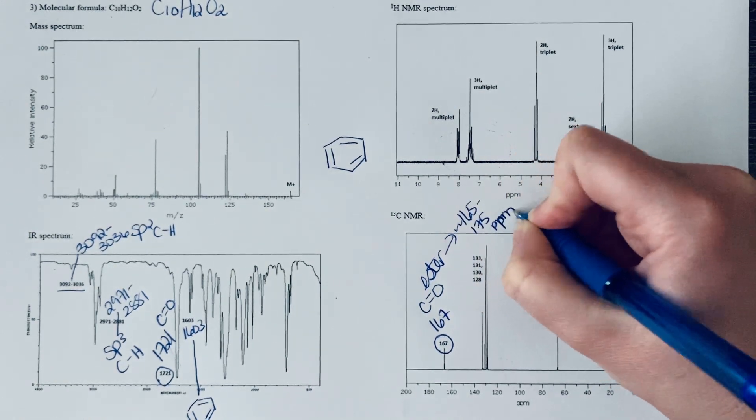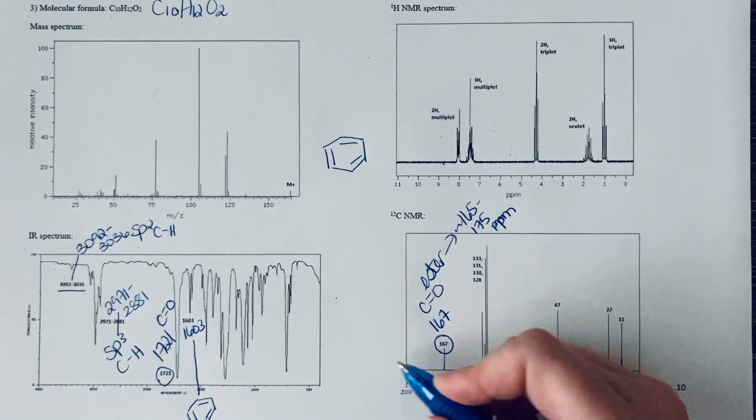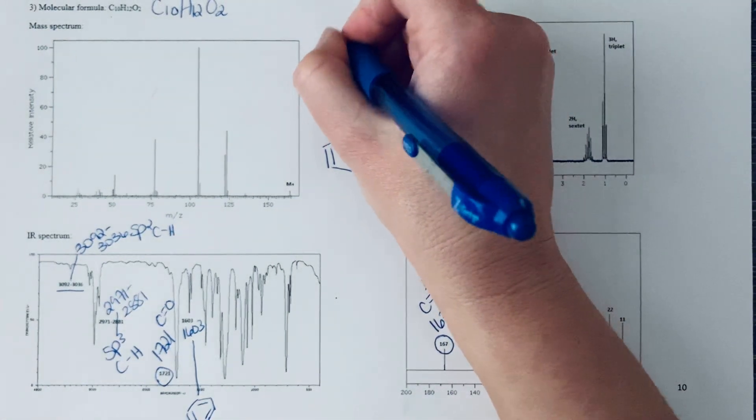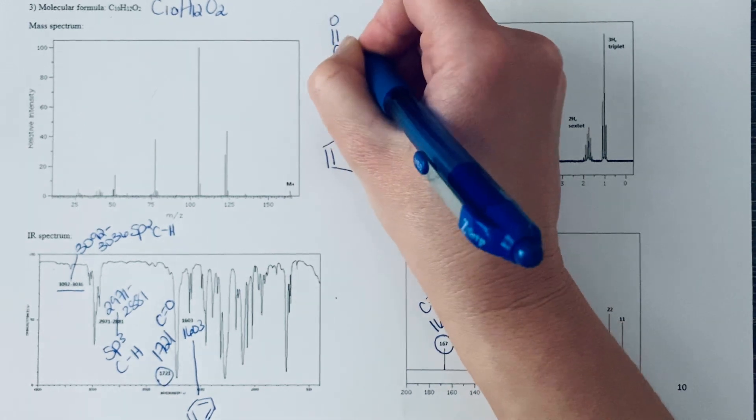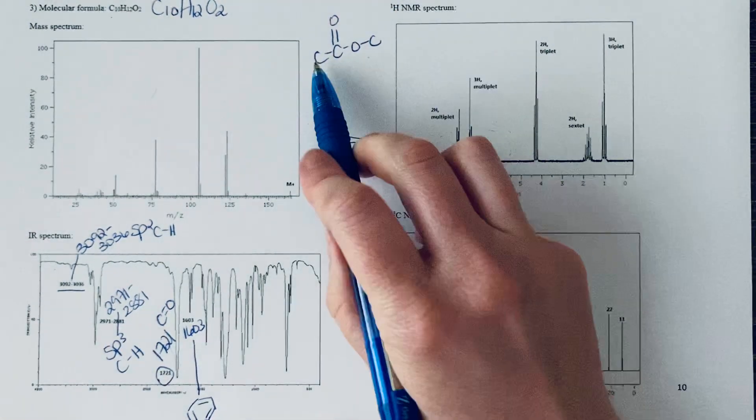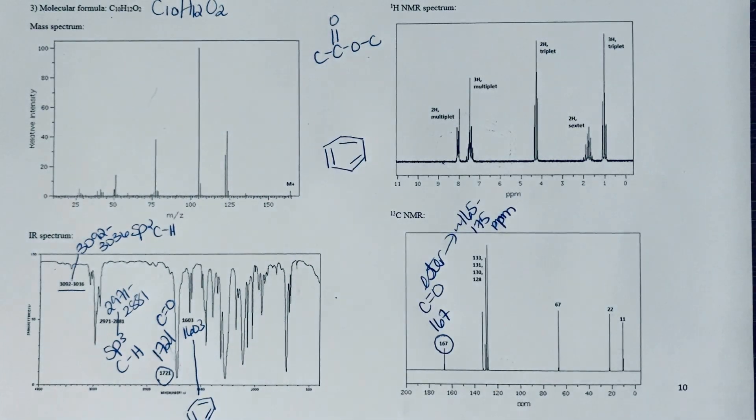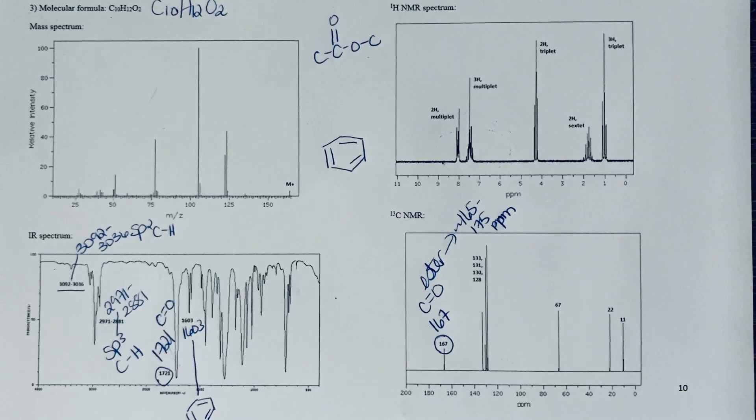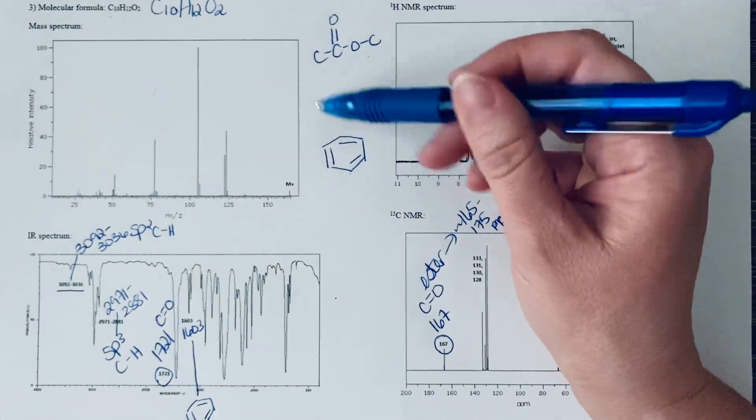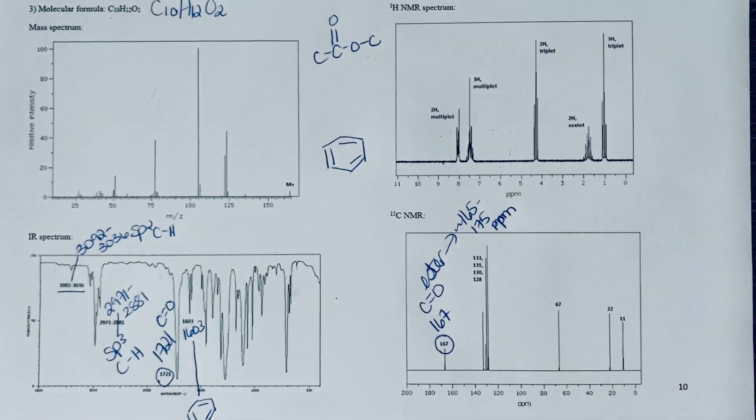We've got a pretty good idea that we have an ester, so let's just draw that framework for an ester. You've got bonds to different carbon groups on either side of that ester. That's really all the information we can get from the IR, but that's actually quite a bit of information. We know a lot about this molecule already.